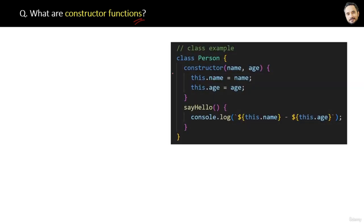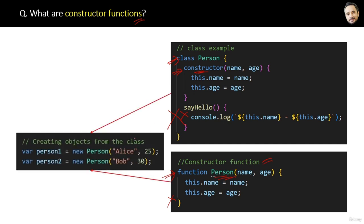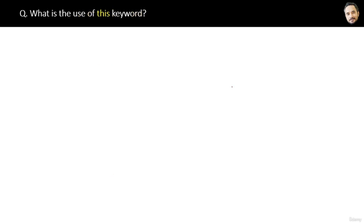What are constructor functions? We already know we can have a constructor inside a class. But suppose you do not want any methods in the class — you can create a constructor function instead. The difference is you cannot put any separate methods inside the constructor function. It works the same as a class that has no methods, and the way of creating the object remains the same. The definition: constructor functions are a way of creating objects and initializing their properties.